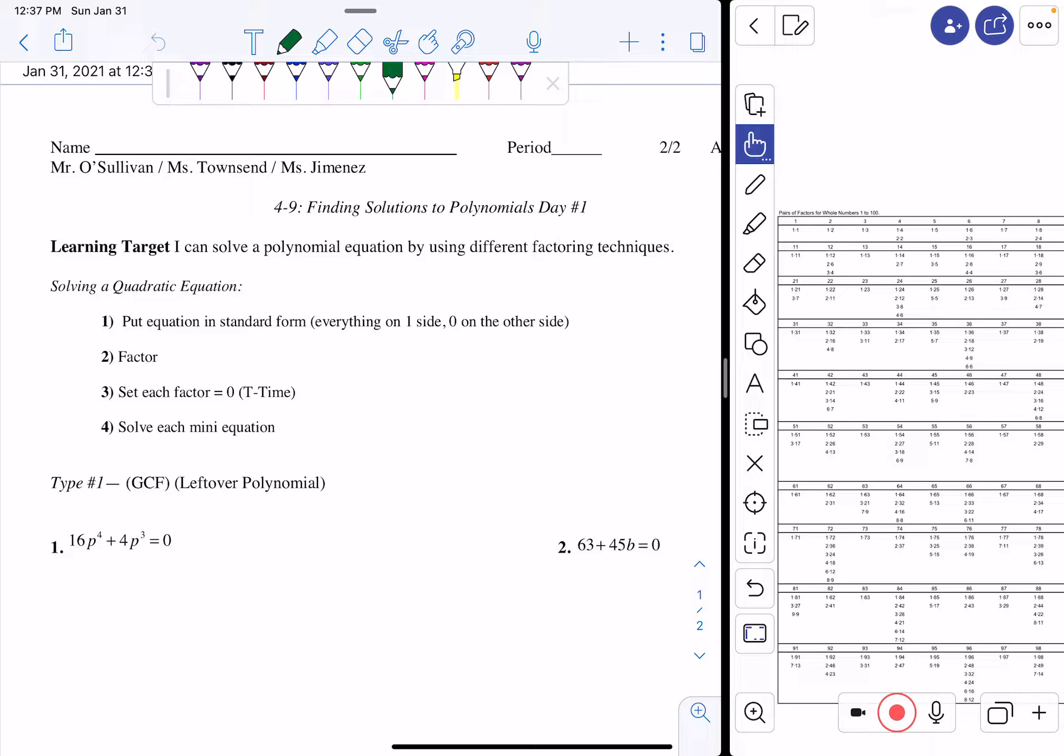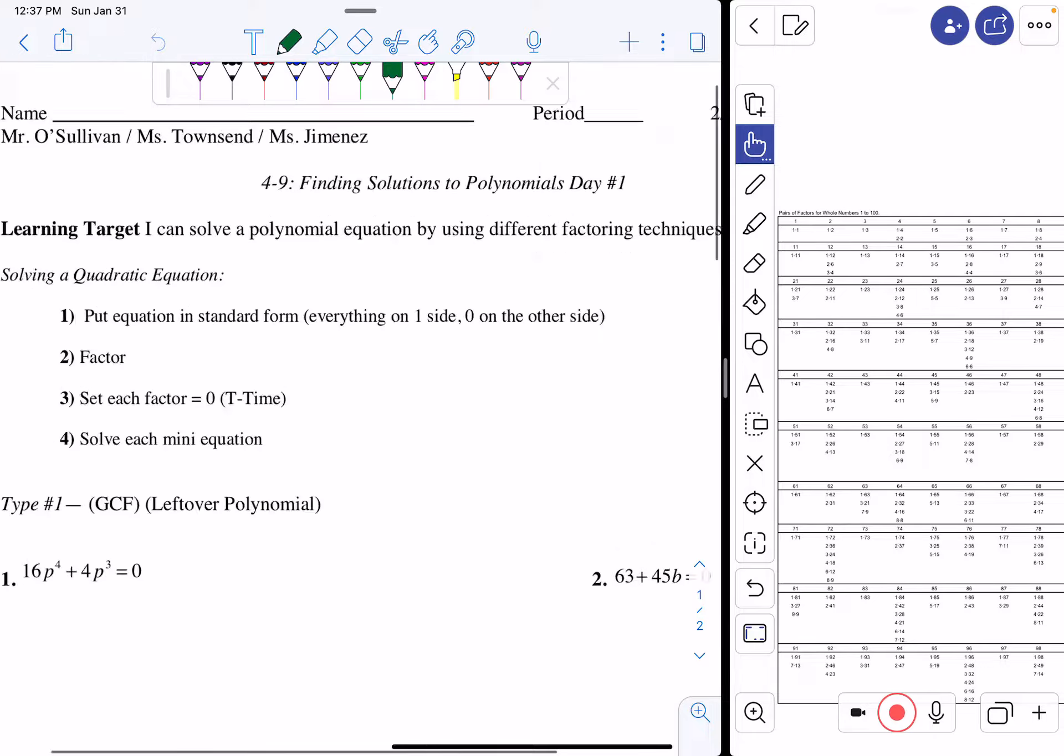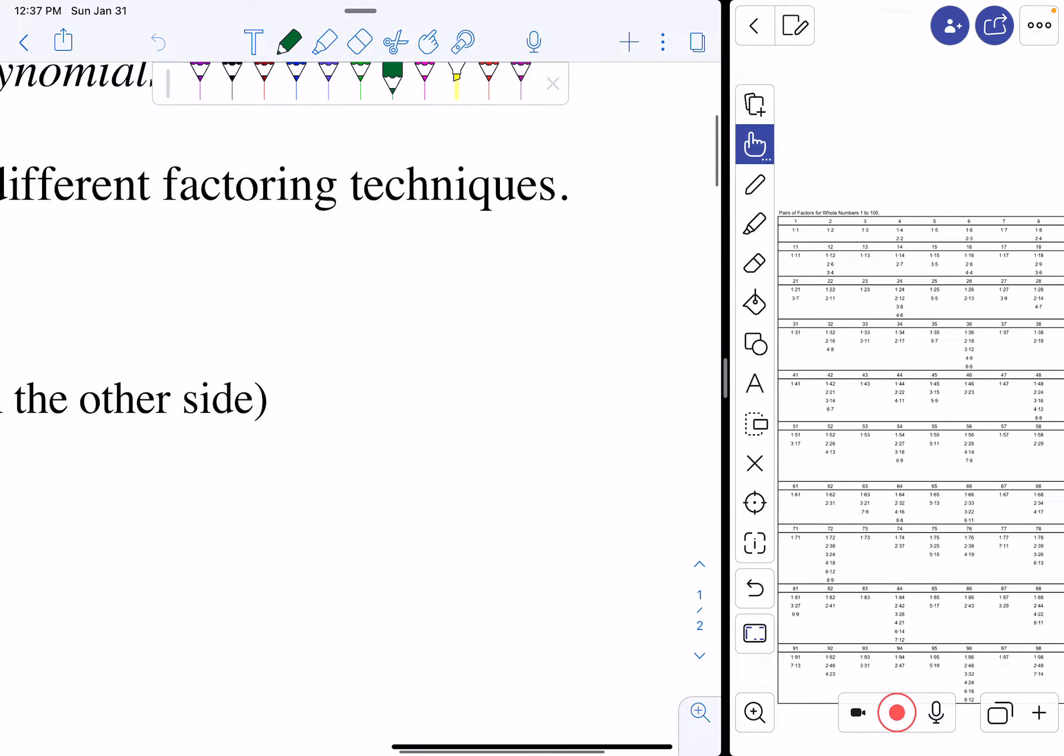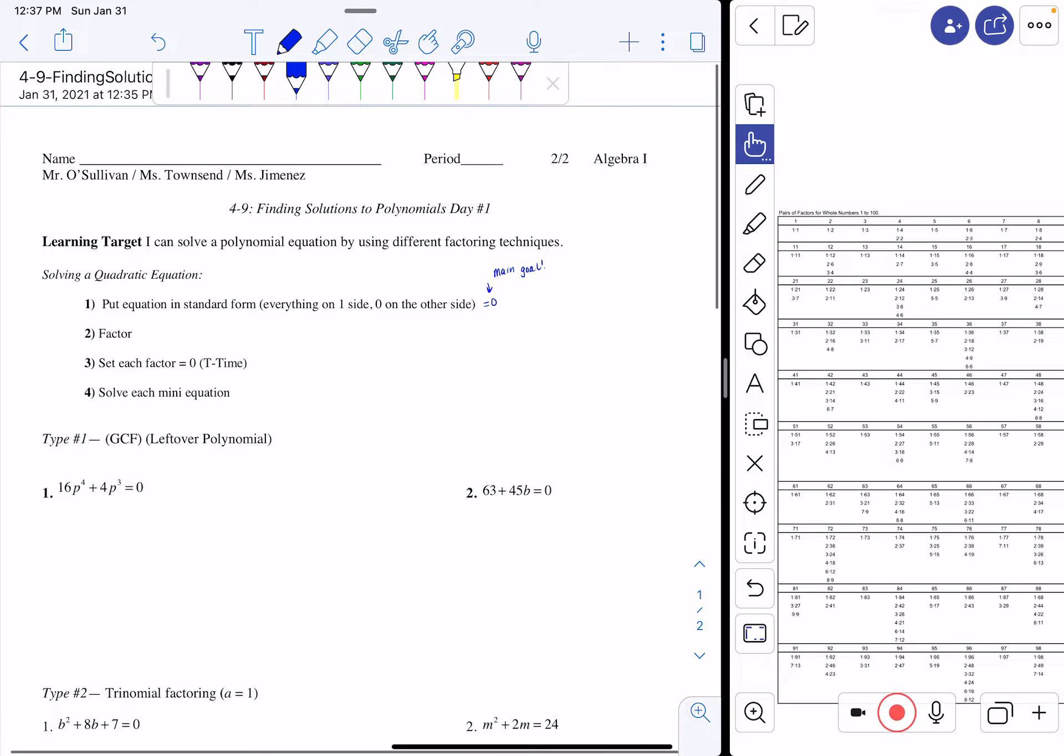Here is our procedure. We're going to put our equation in standard form, everything on one side, zero on the other. So the whole goal is to get your equation to be equal to zero. This is your main goal. Then you're going to factor, then you're going to set each factor equal to zero, or t-time, and then you're going to solve each mini equation.